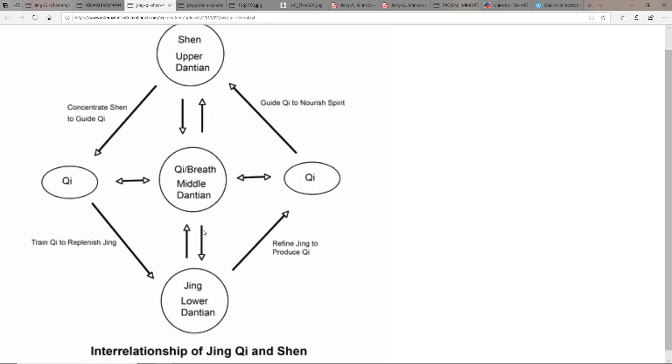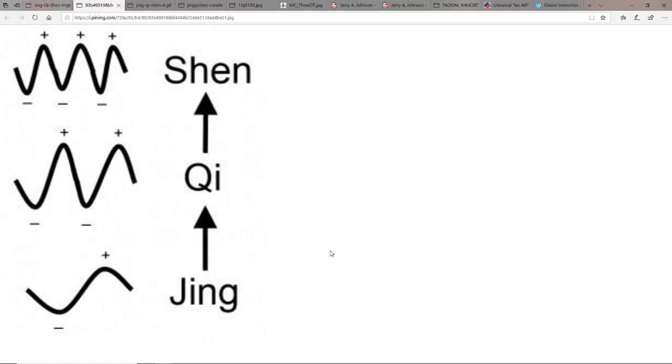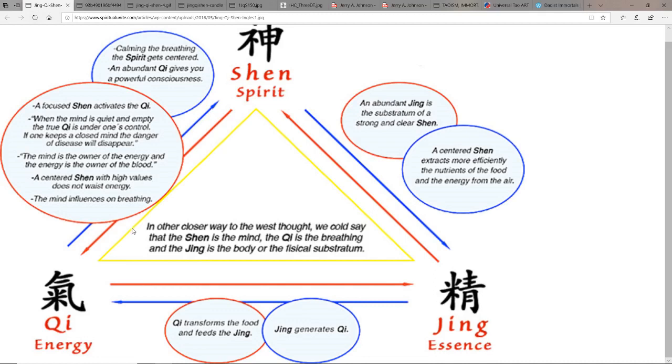So this is why qigong is such a powerful practice. We could think of these three treasures all being the same substance, just basically vibrating at different rates, and that is the reality of it as well. They're just simply vibrating at different rates. As you see here you could view it as a pyramid. Qi transforms the food and feeds the jing. Jing generates qi. A centered shen extracts more efficiently the nutrients of the food.